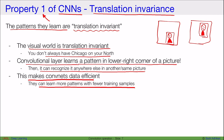This makes CNNs very data-efficient because they can learn more patterns with fewer training samples. From the same picture containing a person and a house, one convolutional neuron may focus on learning houses and another on learning faces — both from within the same picture.